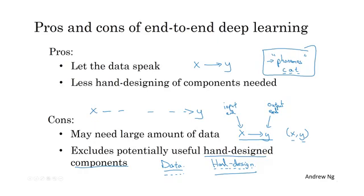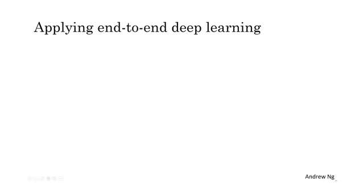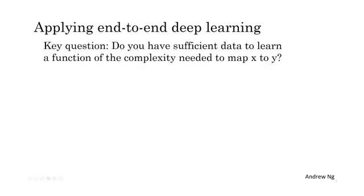So, if you're building a new machine learning system and you're trying to decide whether or not to use end-to-end deep learning, I think the key question is, do you have sufficient data to learn a function of the complexity needed to map from x to y?